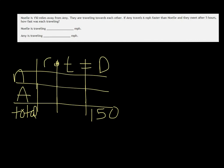So we don't know how fast Noelle is going, we'll just call it R, but if Amy's going 6 miles per hour faster, then her speed is R plus 6.